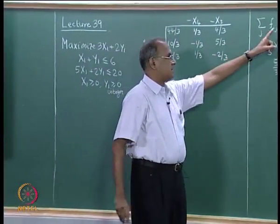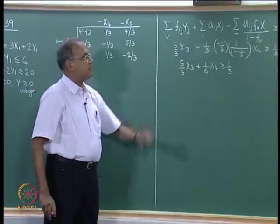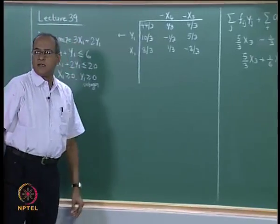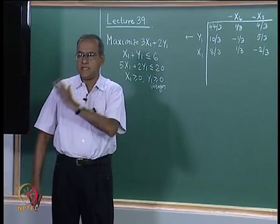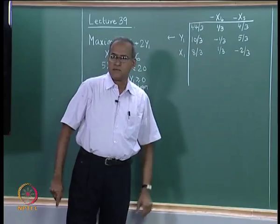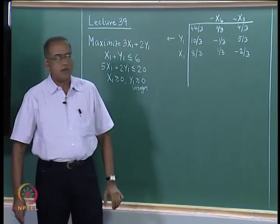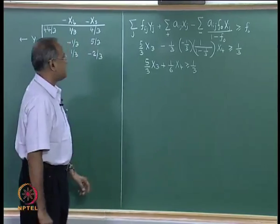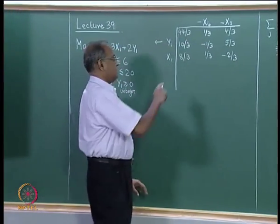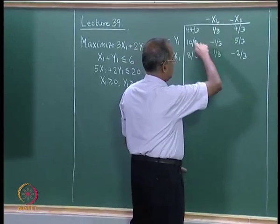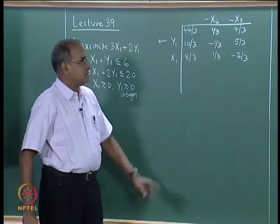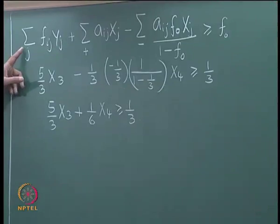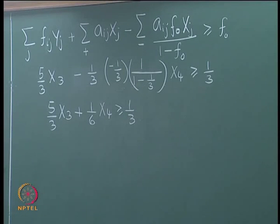From here, we use this MILP cut equation. F0 is the fractional portion of the right-hand side value. Since 10/3 equals 3 plus 1/3, F0 takes value 1/3. We realize that there are no non-basic Yj's in this table. Therefore, the Fij·Yj terms do not figure in our MILP cut for this example.